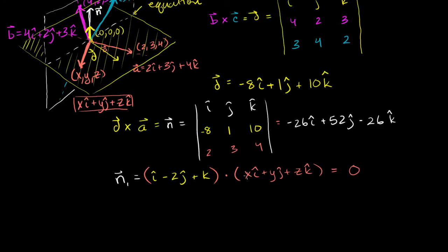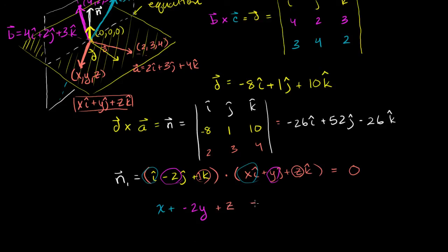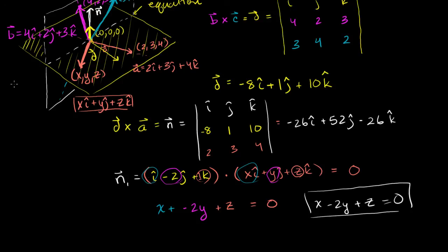Taking the dot product term by term: x times 1 gives x, plus y times negative 2 gives negative 2y, plus z times 1 gives z. So the dot product equals x minus 2y plus z, and that has to be equal to 0. So the equation of our yellow plane is: x minus 2y plus z = 0.